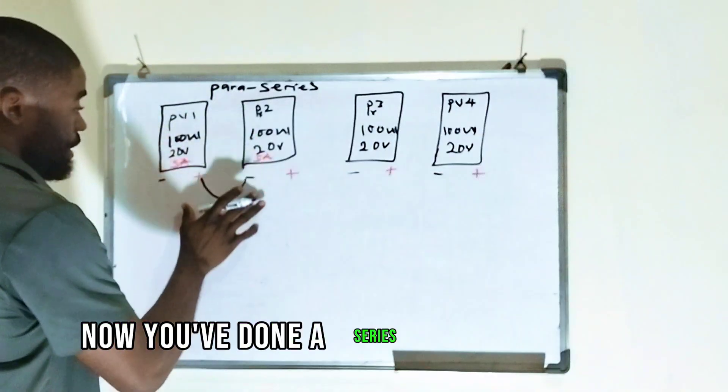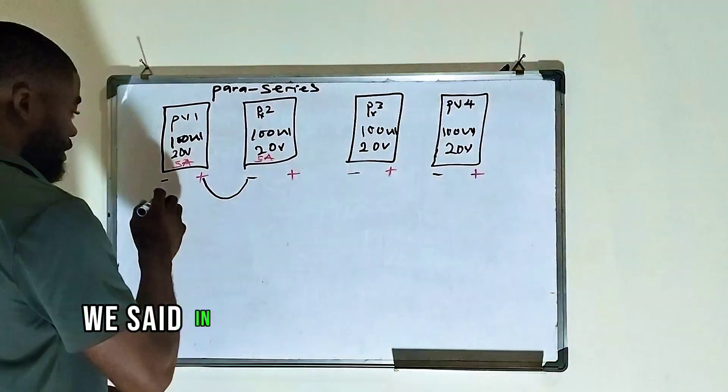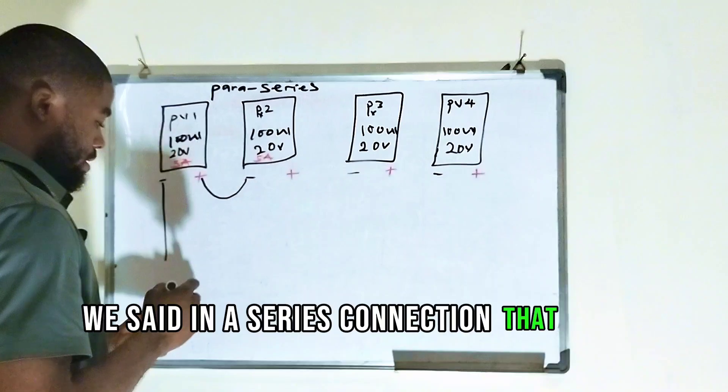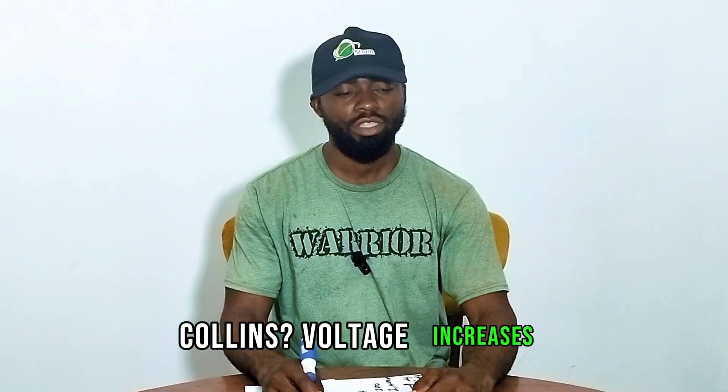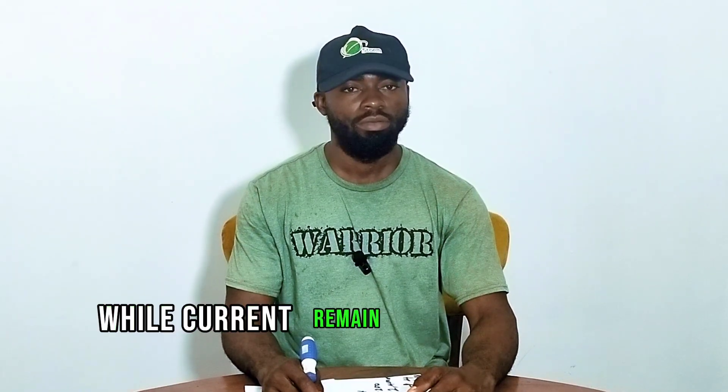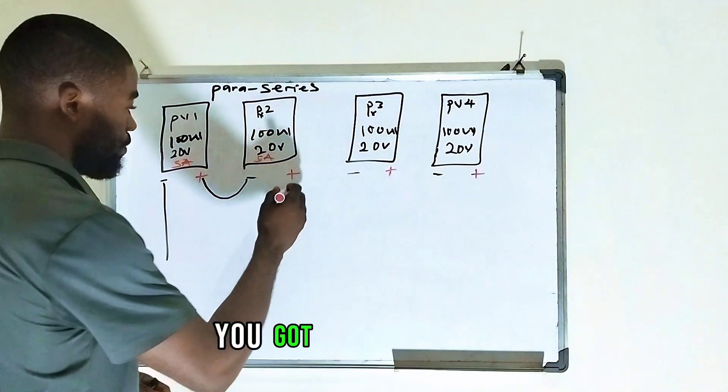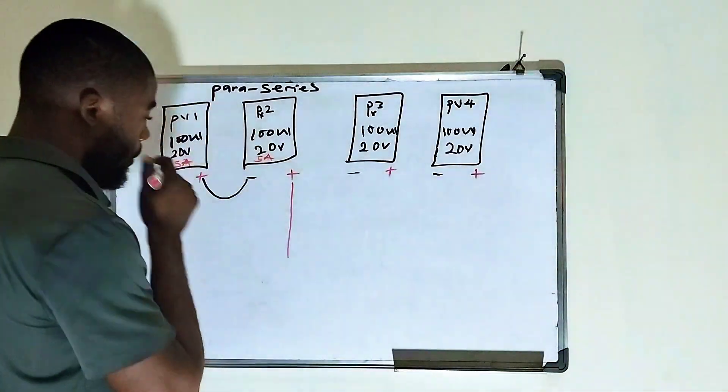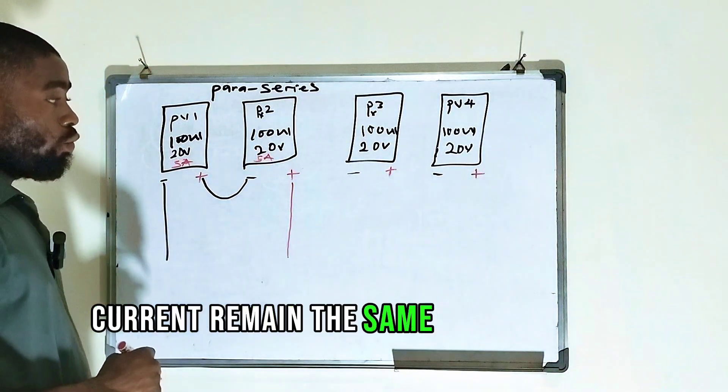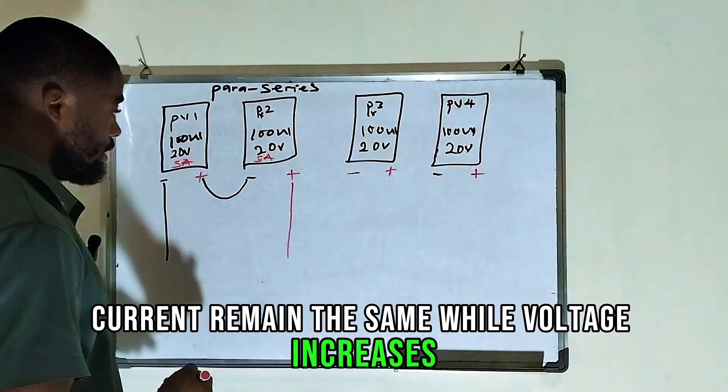Now you've done a Series connection here. We said in a Series connection that what happens, Collins? Voltage increases while current remains the same. I'm correct that. You got this one right. Current remains the same while voltage increases. Are we together?